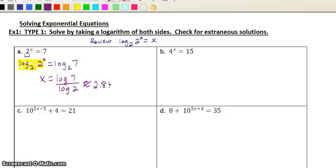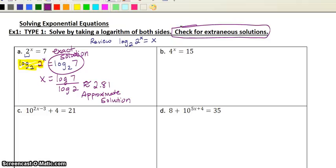You end up with 2.81 approximately. We're going to round to two decimal places today, and find the approximate solution in every situation. If I left it as log base 2 of 7, that would be the exact solution. Now it says check for extraneous solutions. We're going to skip that for now.